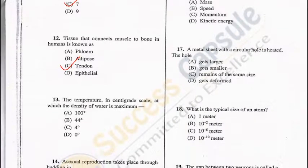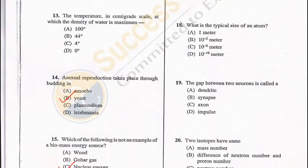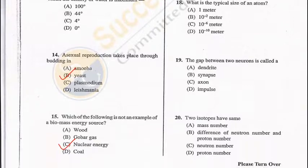Question 18: What is the typical size of an atom? It is 10⁻¹⁰ meters — D is the correct answer. Question 19: The gap between two neurons is called a synapse — B is the correct answer.